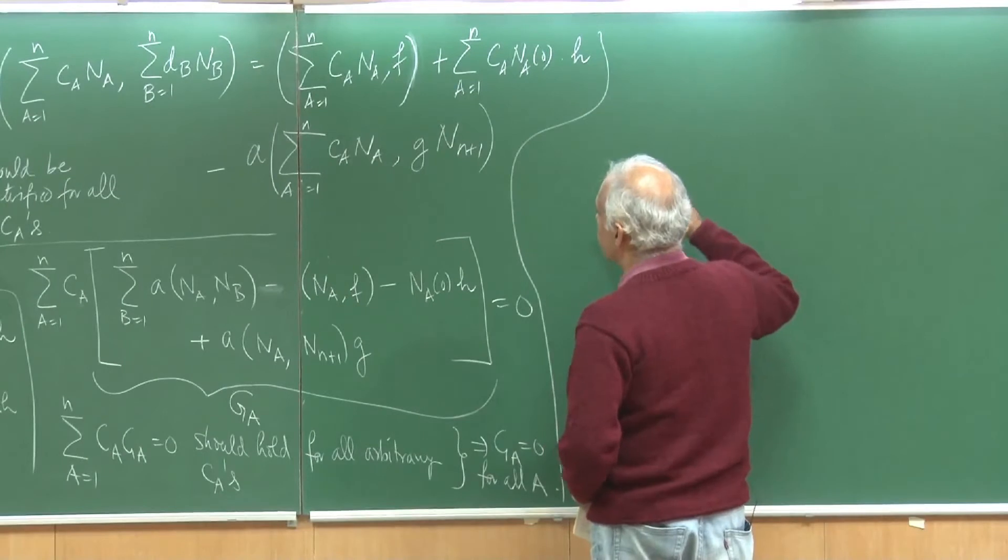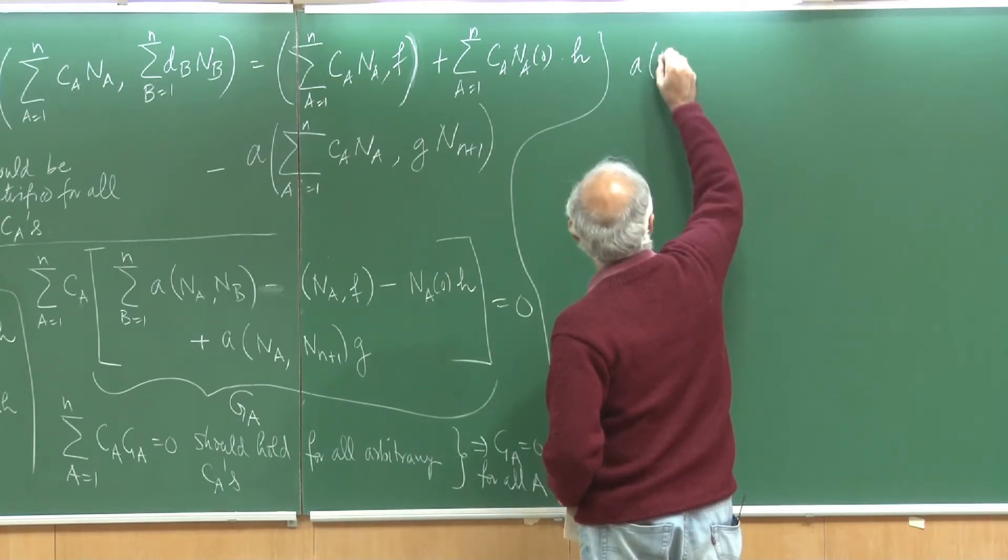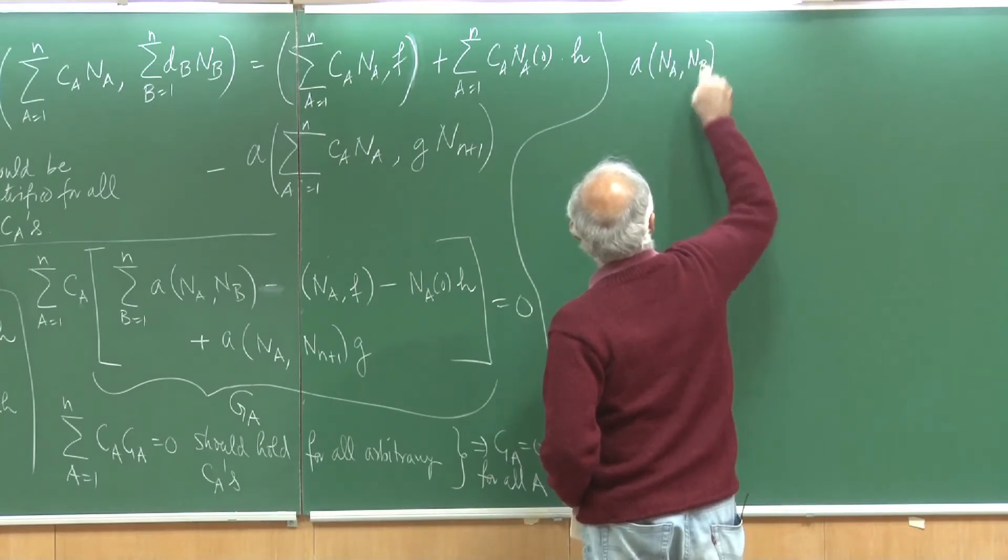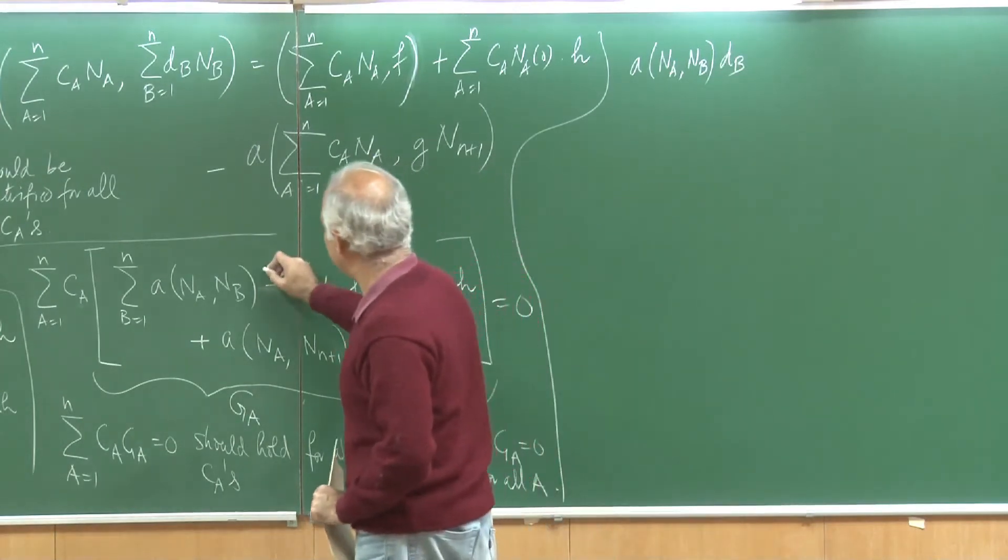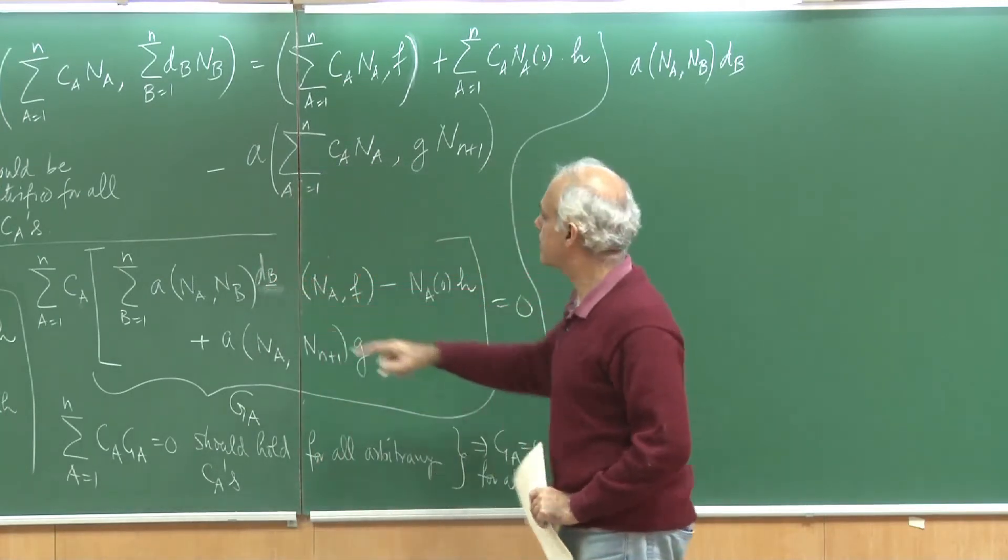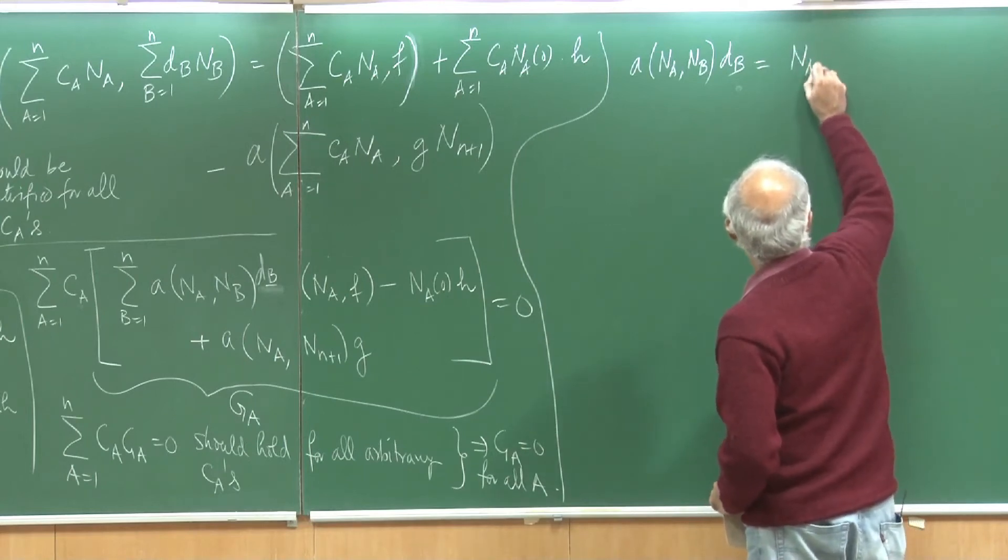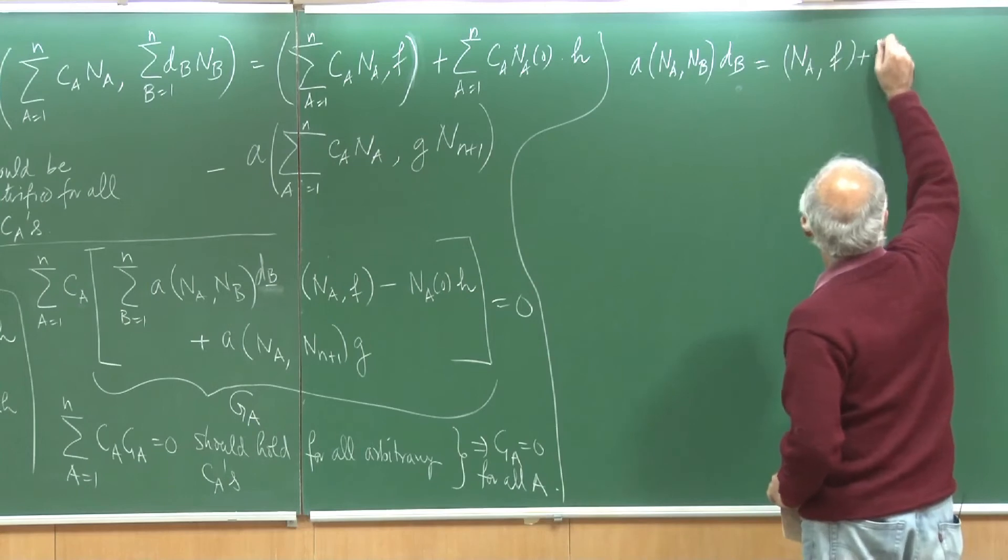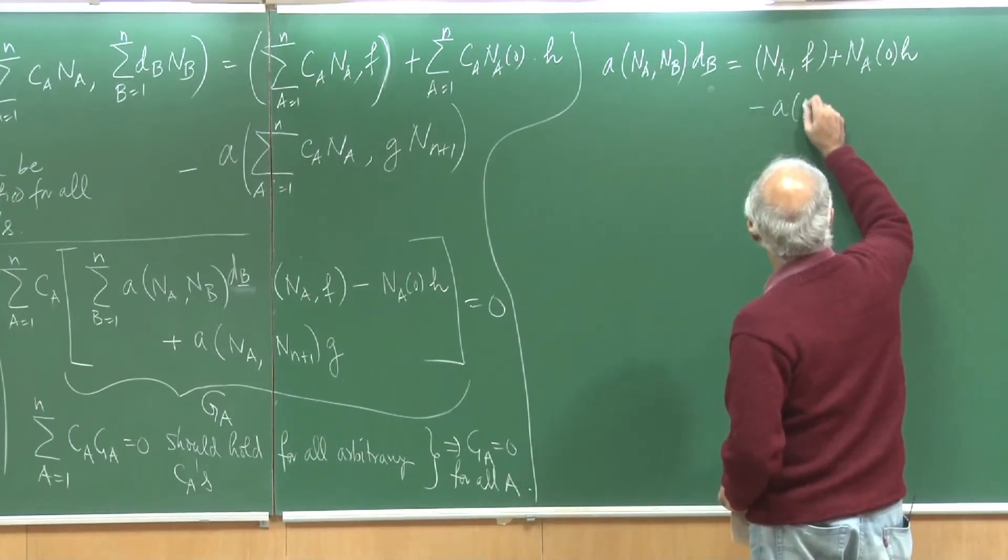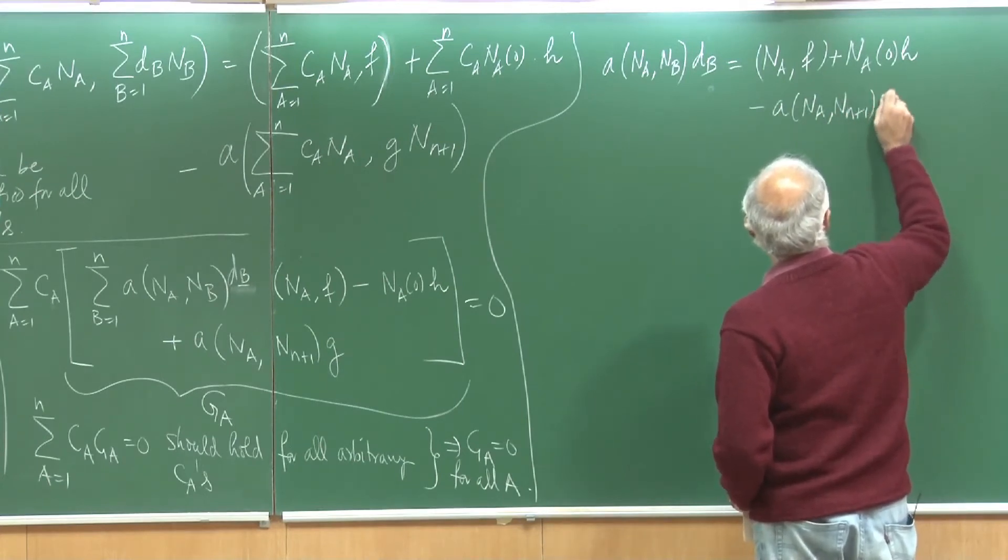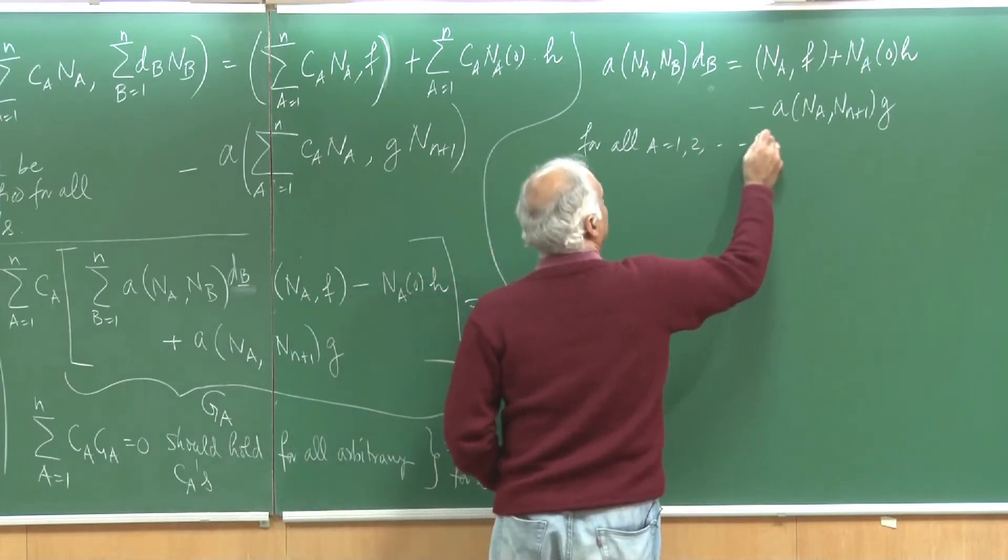This matrix form therefore would generate these equations. I would get a of n_a, n_b times d_b. I am sorry I missed out a d_b here. Let me put it back. This d_b is actually equal to n_a comma f plus n_a(0) times h minus a of n_a, n(n+1) times g. And this is for all a going from 1 to all the way to n.